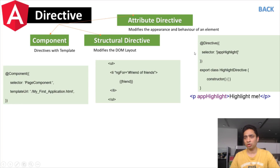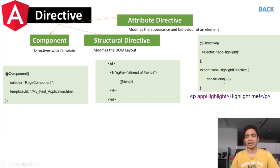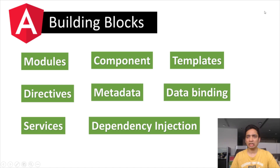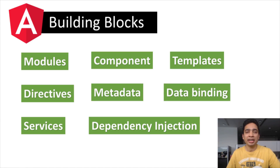An attribute directive example: you specify the directive with a selector like `app-highlight` on a paragraph tag. Inside the directive class, you specify what it should do — such as changing the highlight color or the element size. A component directive has a selector and a template URL — it is essentially a directive with a template.